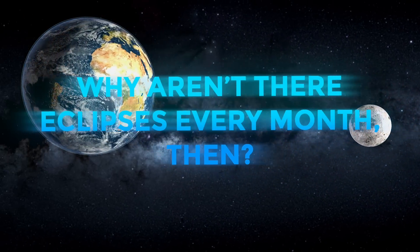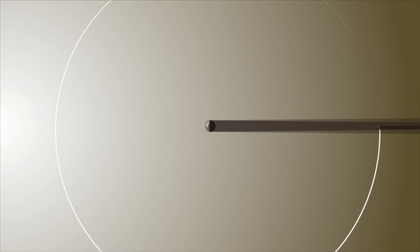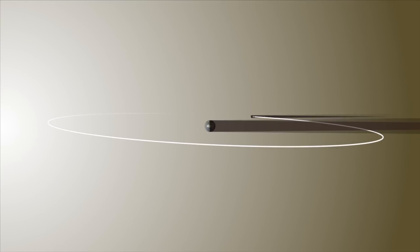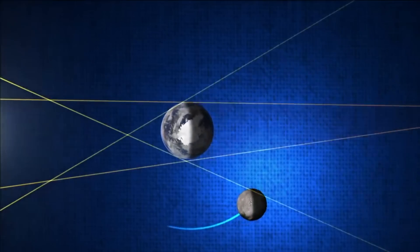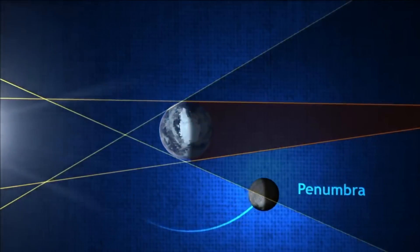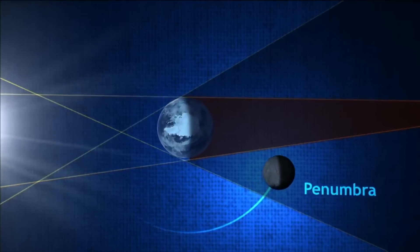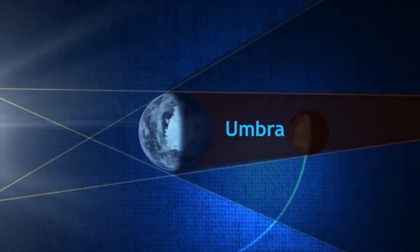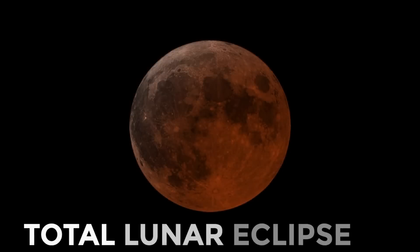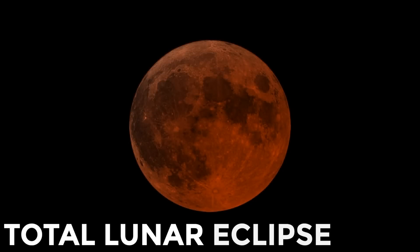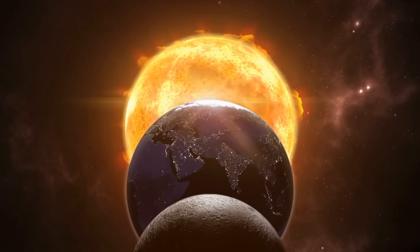Why aren't there eclipses every month then? These alignments don't happen at every new and full moon because the lunar orbit is tipped about five degrees to earth's orbital plane and it is only occasionally that the sun, earth and moon line up exactly enough for an eclipse to occur. Well the technical name for that is syzygy. Have fun pronouncing that. However when the earth does eclipse the moon it generally casts two types of shadows: a wider shadow known as the penumbra and a smaller darker shadow known as the umbra. Typically there are three types of lunar eclipses.